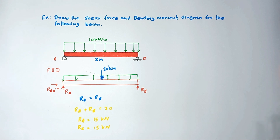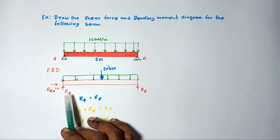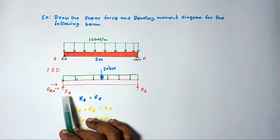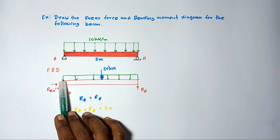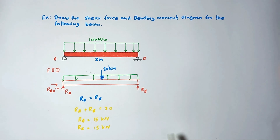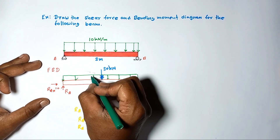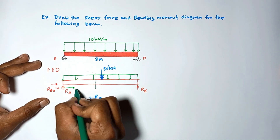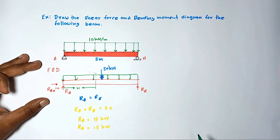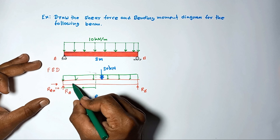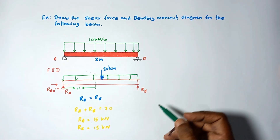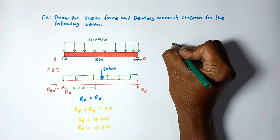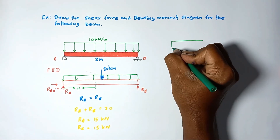We are going to divide the beam into segments so that the loading within each segment is continuous. Here the loading throughout the length of the beam is continuous, so we can consider the entire beam as one segment. I am going to introduce an imaginary cut at distance x from the left-hand side, and then consider this separated beam part. Let me draw the free body diagram for this separated beam segment.